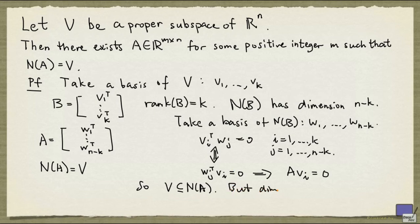But the dimension of V is k, and that is the same as the dimension of the null space of A. To see this, notice that the rank of A is n-k, because all the rows are linearly independent. So the null space of A will have dimension n minus n-k.